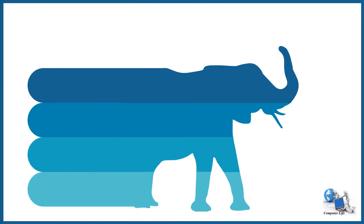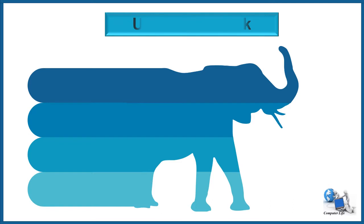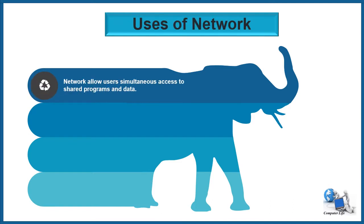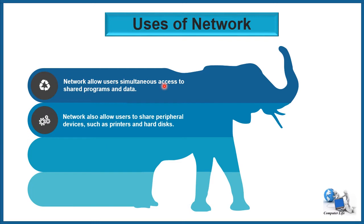First, we will study uses of network. The first use is that networks allow users simultaneous access to shared programs and data. Simultaneous access means you can share different programs at the same time. The next use is that networks also allow users to share peripheral devices such as printers and hard disks.